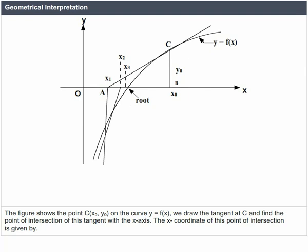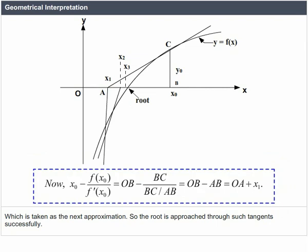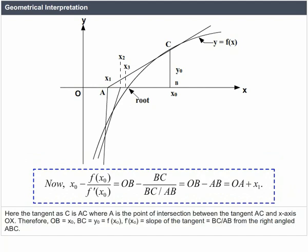We find the point of intersection of the tangent with the x-axis. The x-coordinate of this intersection is given by xi+1 = xi - f(xi) / f'(xi), for i = 0, 1, 2, etc., which is taken as the next approximation. The root is approached through such tangents successively. Here: x0 - f(x0)/f'(x0) = OB - BC/AB = OA. The slope of the tangent equals f'(x0) = BC/AB from the right-angled triangle ABC.